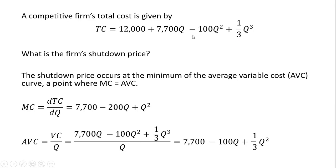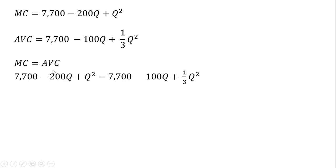Variable cost depends on the value of Q. So I take the variable cost part of the total cost equation and then divide it through completely by Q, which will leave us with the following. So marginal cost once again, average variable cost once again, and now setting both of those equations equal to one another.